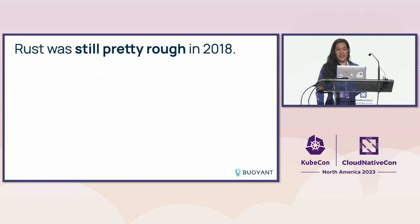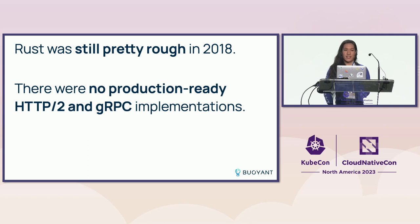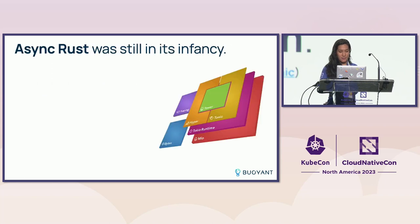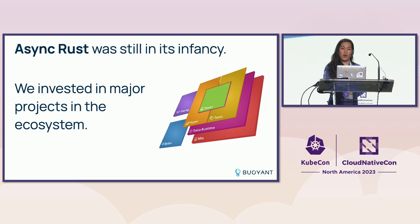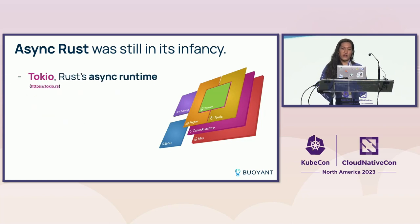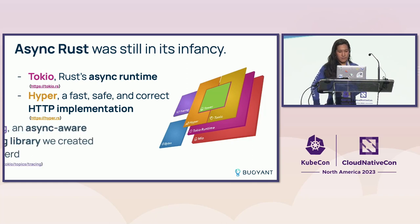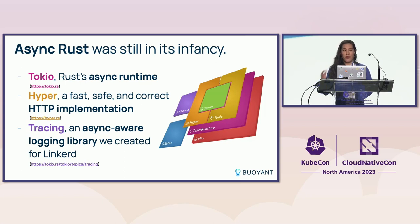Back in 2018, the state of Rust was a little rough for this kind of work. There were no production-ready HTTP/2 or gRPC implementations, so we helped build them — Hyper, H2, and Tonic are libraries we helped bring into existence. Async Rust was still in its infancy. We invested heavily in projects in the ecosystem: Tokyo (Rust's async runtime for async I/O), Hyper (the fast, safe, correct HTTP implementation for HTTP/1 and HTTP/2), and Tracing (an async-aware logging library that has since gained widespread popularity throughout the ecosystem).